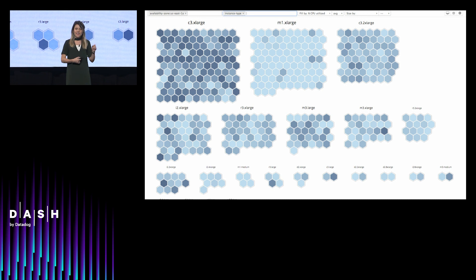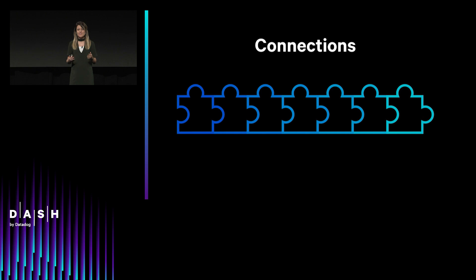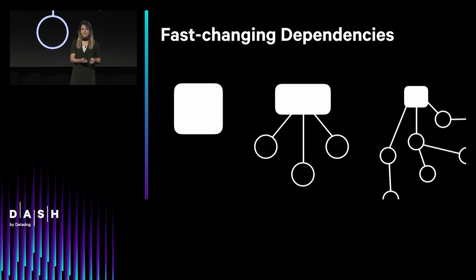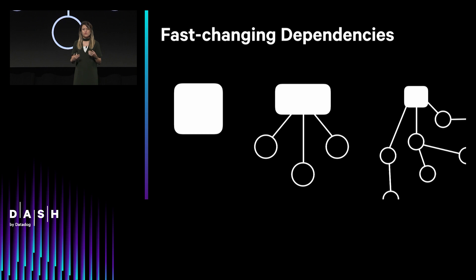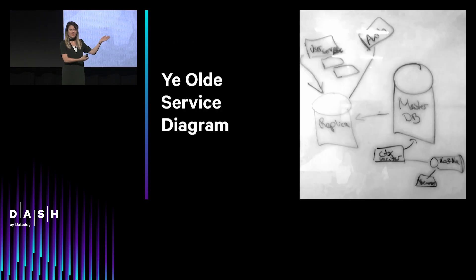But I want something a little bit more, because I always want more. I want connections. I want to see how things fit together. Because in this world of fast-changing dependencies, where we're moving from monoliths to services to microservices, your dependencies are changing out from under you so quickly. Your colleague launches a service, and you're really lucky if they tell you that it now exists. So how do we manage this?